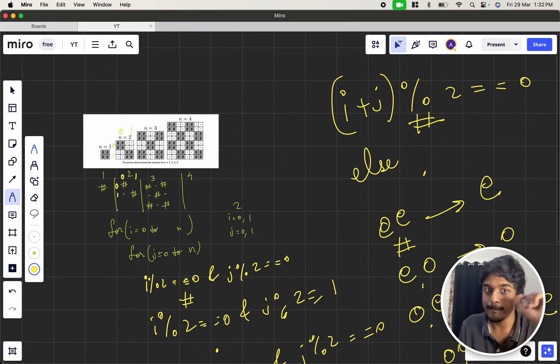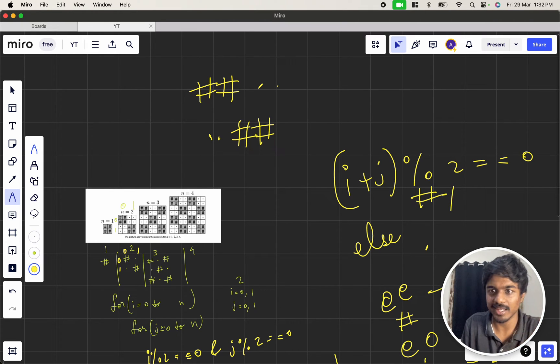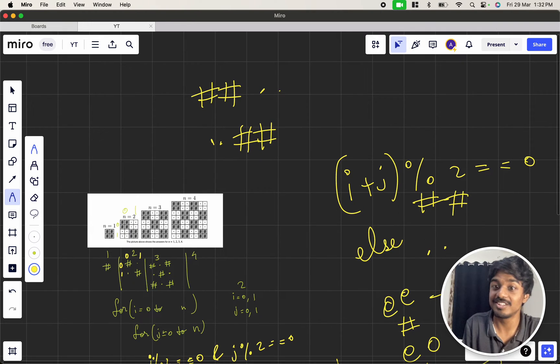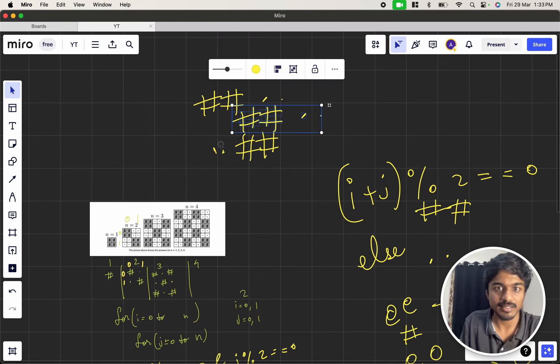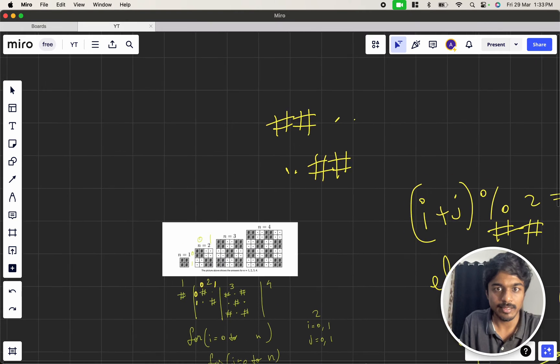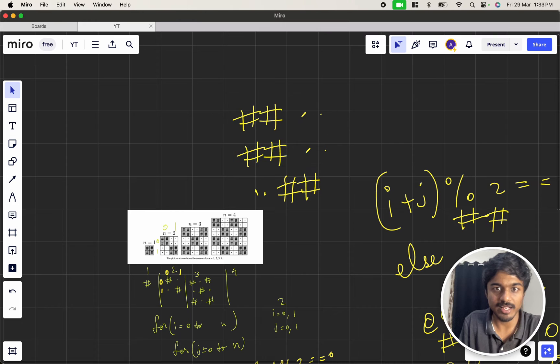Two times it should come. So instead of hash dot and dot hash, let's expand this further. It can be hash hash dot dot, dot dot hash hash. Instead of this I keep hash hash and dot dot, but they told you have to make it two times. So what do I do? Copy this and paste it. You copy this entire thing and paste it, similarly we copy this one and paste it.